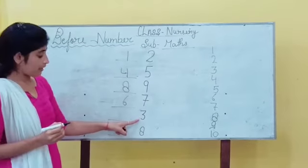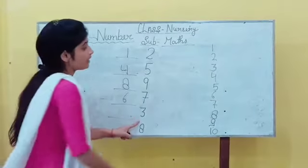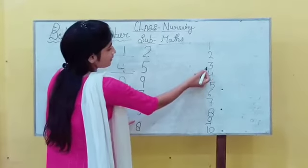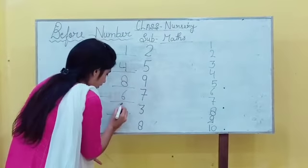Next, 3. What is number? 3. Now, find the 3. 3 before? 2. Right here. 2.